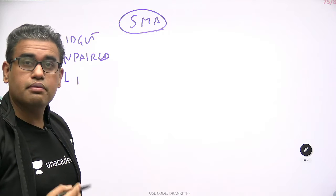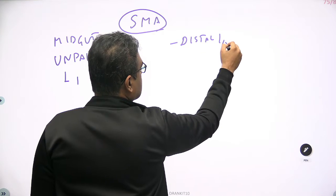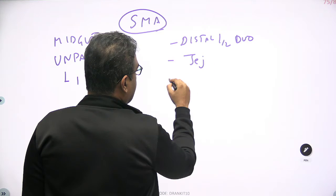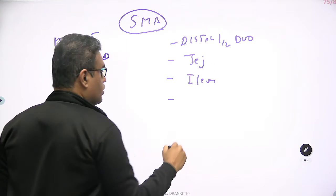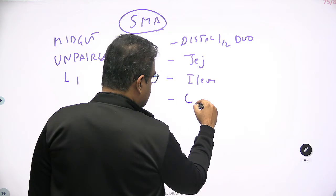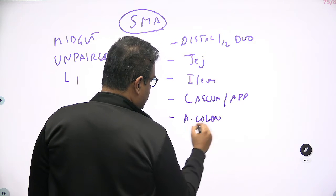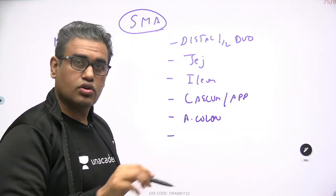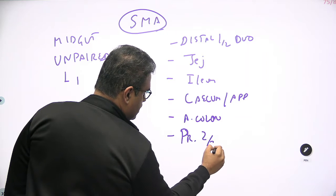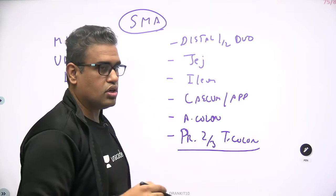Now, what is in the midgut? The midgut has a few important structures: the distal half of the duodenum, plus other parts of the small intestine like the jejunum and the ileum. Then you have the initial part of the large intestine, which includes the cecum with the appendix, the ascending colon, and then the transverse colon — but not the whole transverse colon; only the proximal two-thirds of the transverse colon.